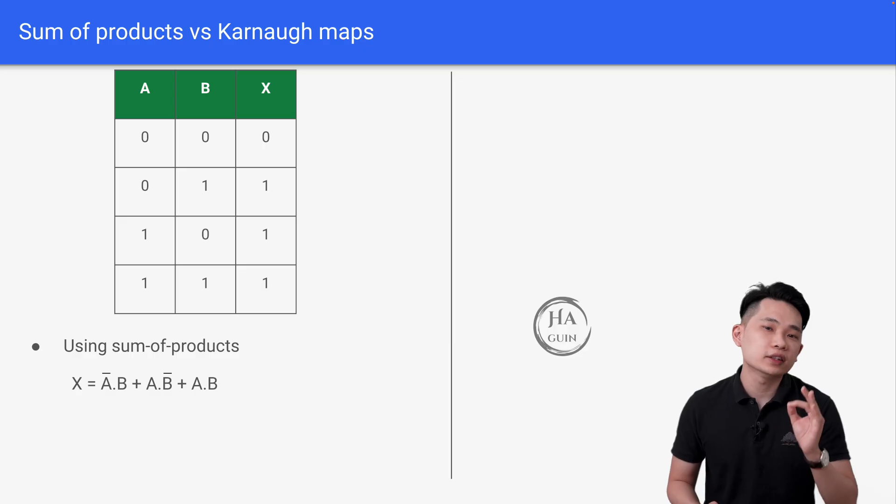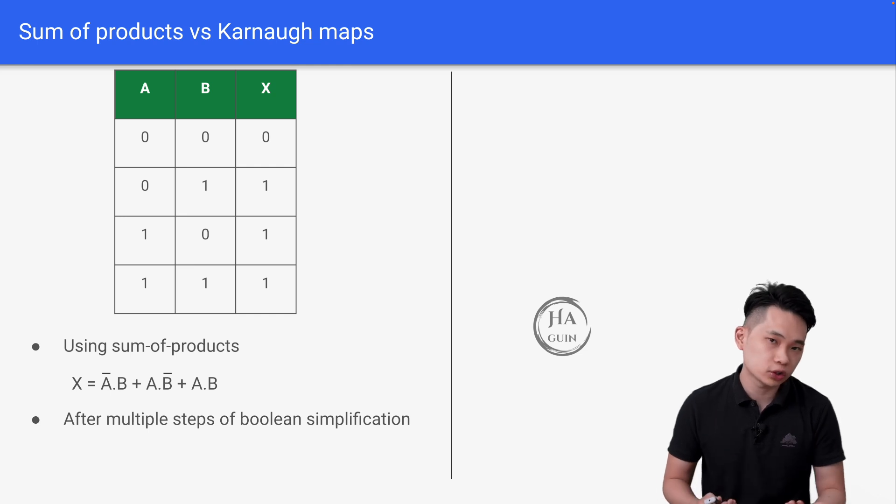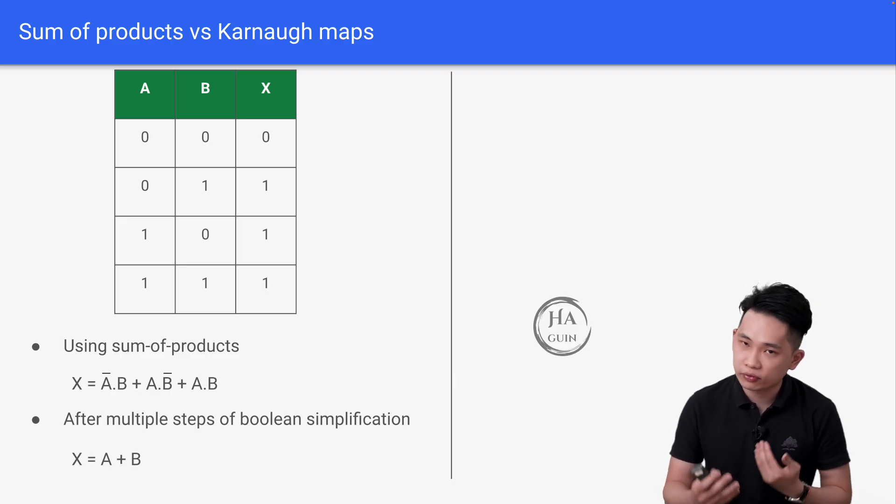But we can see that this is not the simplest form, so we have to simplify the equation. After multiple steps of Boolean simplification, we will get X equals A plus B. This is quite a tedious process and we might make some errors during the simplification process.